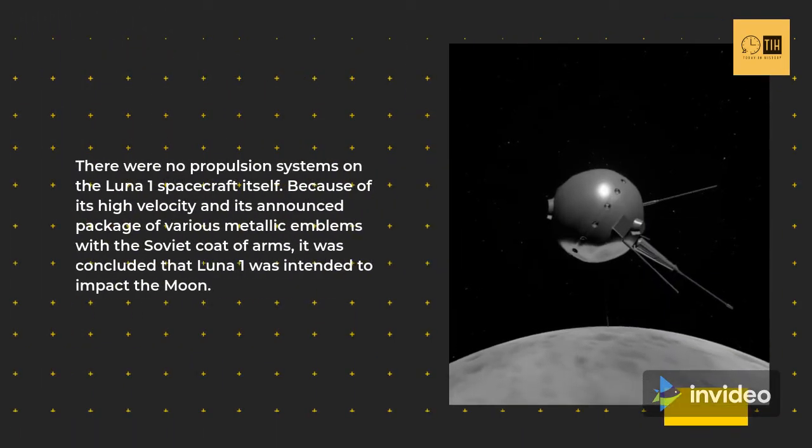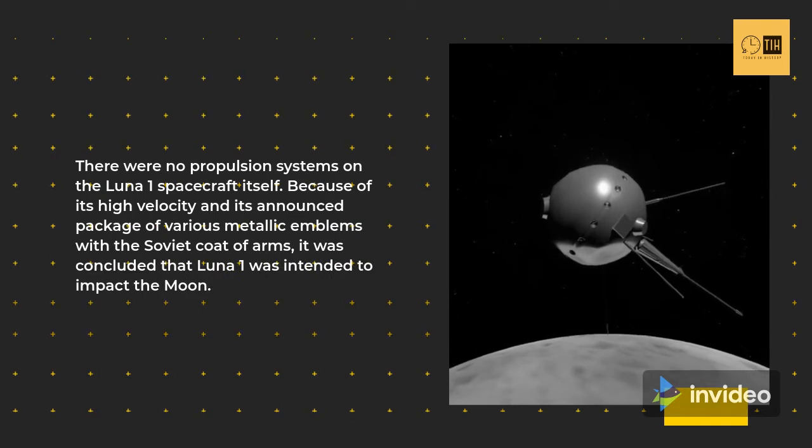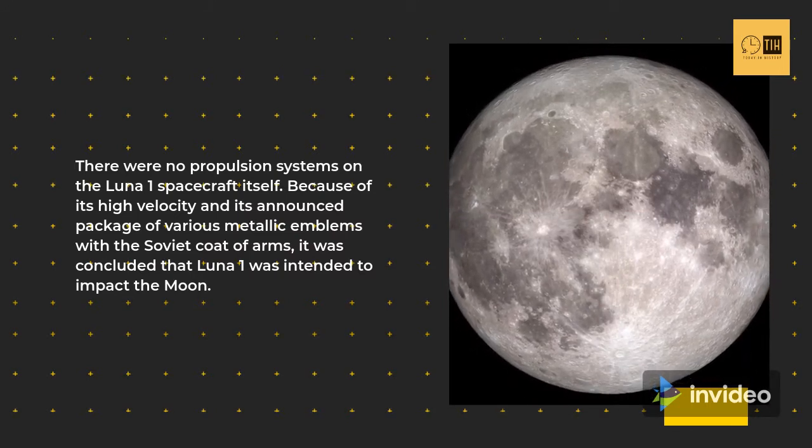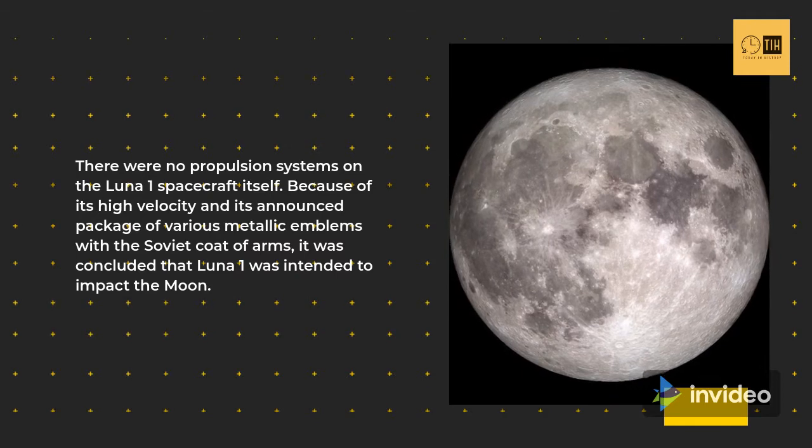There were no propulsion systems on the Luna 1 spacecraft itself. Because of its high velocity and its announced package of various metallic emblems with the Soviet coat of arms, it was concluded that Luna 1 was intended to impact the Moon.